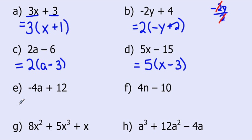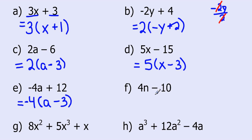Negative 4a plus 12: what number goes into both? 4 goes into itself and 4 goes into 12, so I'm going to take a 4 out. I'm going to take a negative out here so that inside my bracket I don't have a negative. Negative 4a divided by negative 4 is a, and 12 divided by negative 4 is negative 3. For 4n and 10: 2 goes into both, but 4 doesn't go into 10. So the greatest common factor is definitely 2, leaving n, and negative 10 divided by 2 is negative 5, so I'm left with 2(n minus 5).